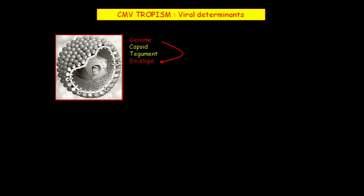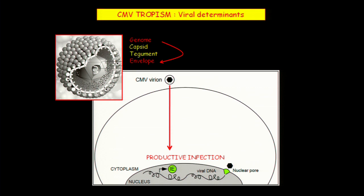The viral determinants, of course, affect the proteins that are synthesized by the virus. Many of those end up on the envelope as well as the tegument. Therefore, this can affect the way the virus enters cells and starts productive infection, which basically requires expression of the immediate early genes. If you don't have IE expression, productive infection is basically halted.